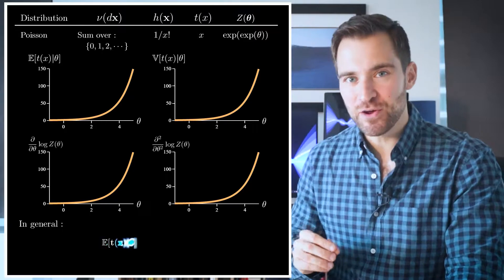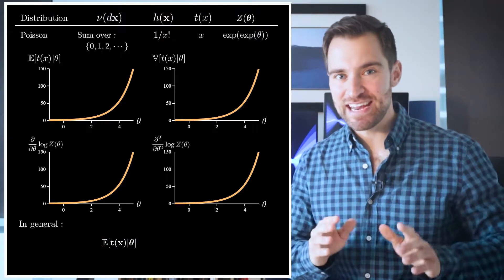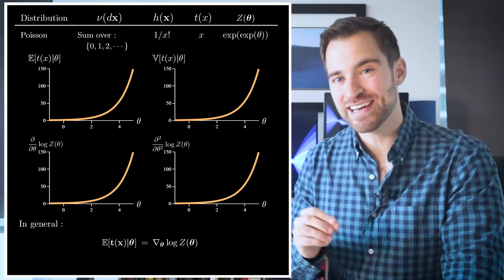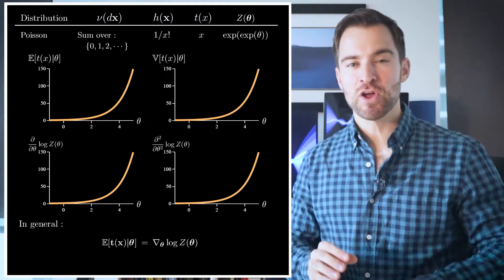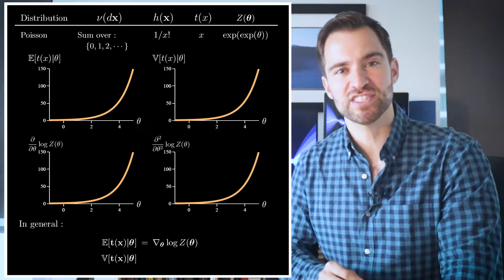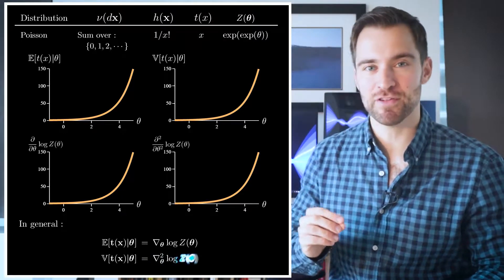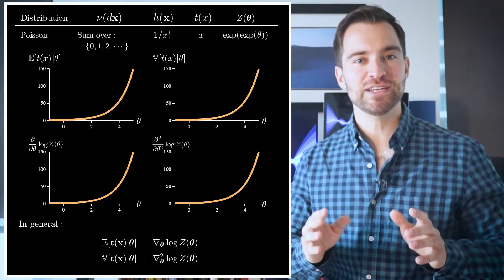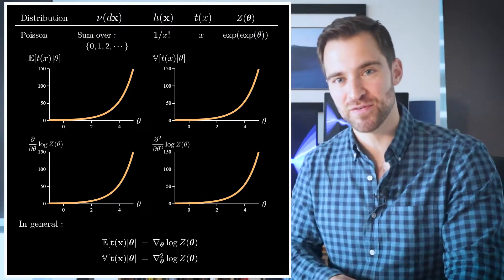In fact, let's state it in its generalized form. That is, the expected value of the sufficient statistics given θ is equal to the gradient of the log normalizer when evaluated at θ. Similarly, the covariance matrix of the sufficient statistics is equal to the Hessian of the log normalizer.